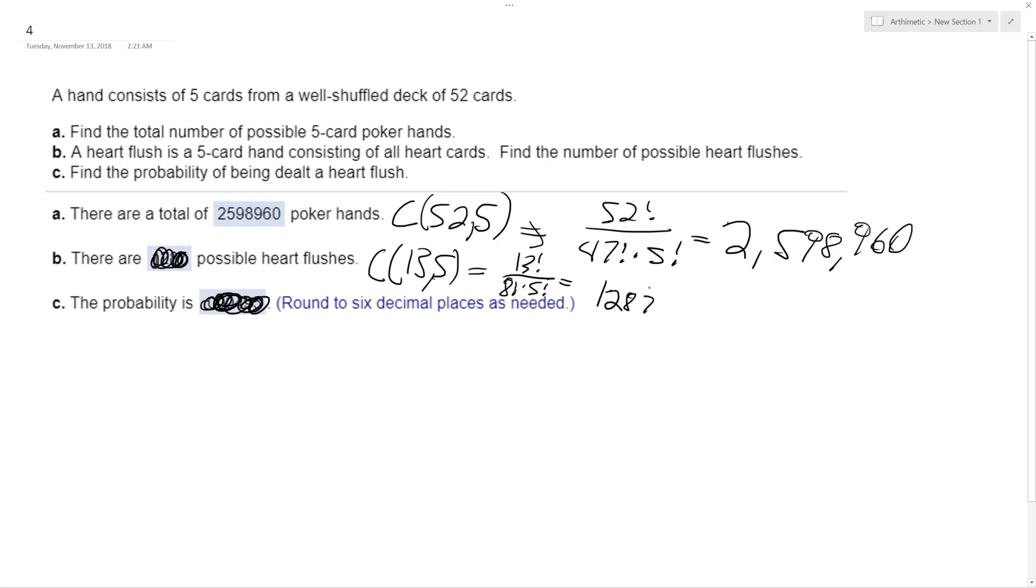And then the probability of getting a heart flush is going to be one thousand two hundred eighty-seven over the two million five hundred ninety-eight thousand nine hundred sixty. This ends up being pretty small. This isn't percent, this is just raw probability: 0.000495, rounded to six decimal places.